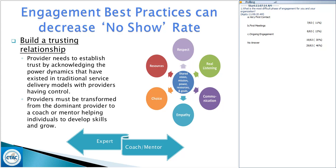On the right side of the slide you see what I call the collaboration model — all the elements of collaborating with individuals and families. The foundational piece is building a trusting relationship. A provider must establish trust by acknowledging the power dynamics that have generally existed in traditional service delivery models where providers have control. Don't be surprised if individuals are slow to offer feedback, because historically that may not have been their experience. They are coming from traditional models where providers have been directing them.